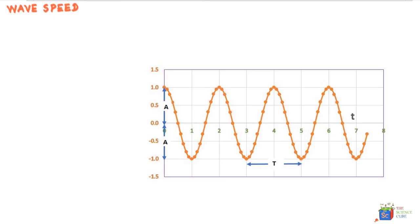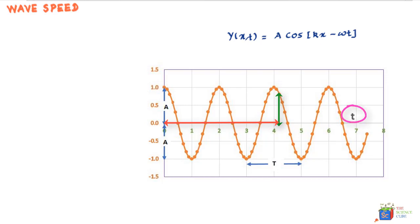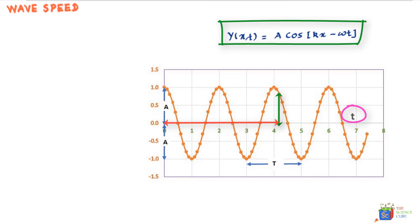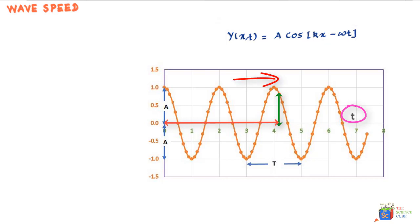What you learned in the last lesson was that the equation y = A cos(kx − ωt) gives y, the vertical displacement of a point at position x and time t. Using this equation, you can find the velocity of the wave as it moves forward in the positive x direction.